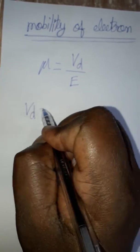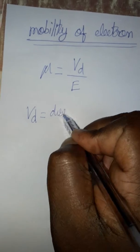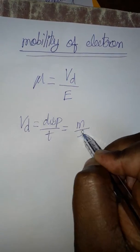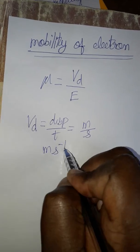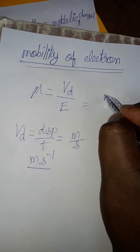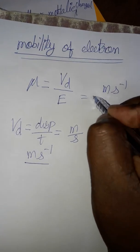Drift velocity is velocity, which is equal to displacement by time. So drift velocity SI unit is meter second inverse, meter per second, or m⋅s⁻¹.